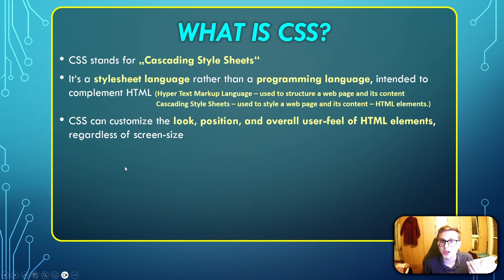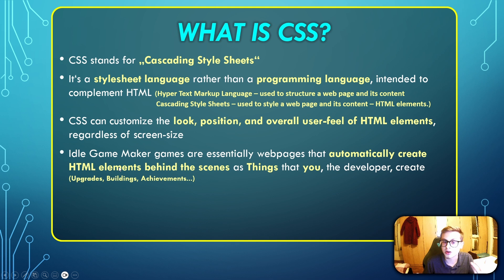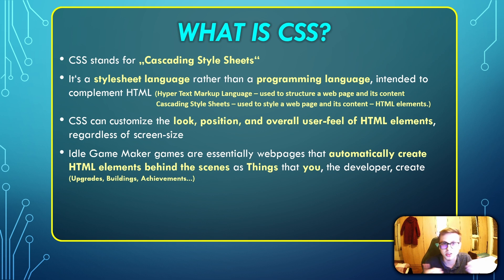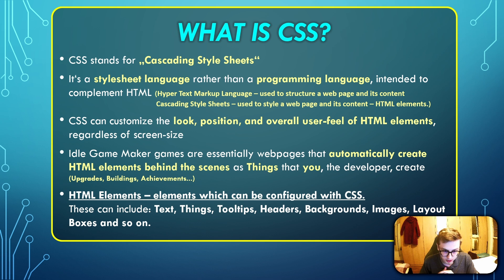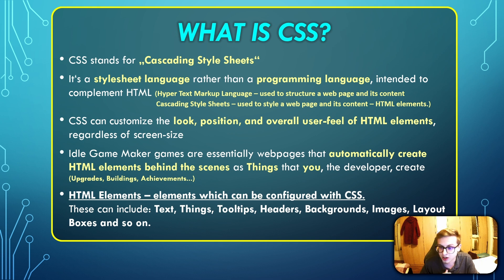Idle Game Maker games are essentially web pages that automatically create HTML elements behind the scenes as things that you the developer create — so those are upgrades, buildings, achievements, and so on. The formal definition of HTML elements is a bit more complex, but for now just think of HTML elements as elements which can be configured with CSS. We'll get back to this in future episodes. For now, just remember these can include text, tooltips, headers, backgrounds, images, layout boxes, and so on.